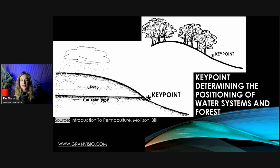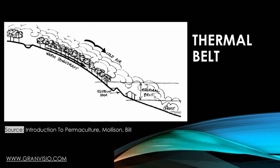The forested area creates a thermal belt and has a very nice feature. Frost moves across the top of the ridge and sometimes rolls downhill, moving over the trees and pushing warmer air down — between the frost above the key point and the valley floor below. So there is a thermal belt, and this warm area just below the key point is where people might choose to live.